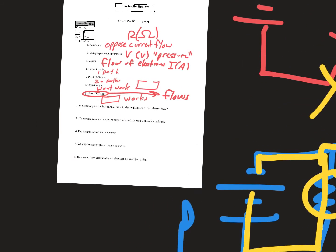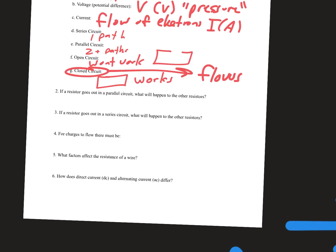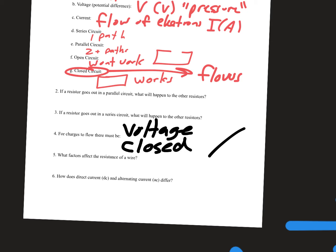For charges to flow, there must be two things: voltage — which is like the pressure pushing current through — and a closed circuit. Electricity won't just flow to the end of a wire. Once you connect the circuit, it starts flowing.